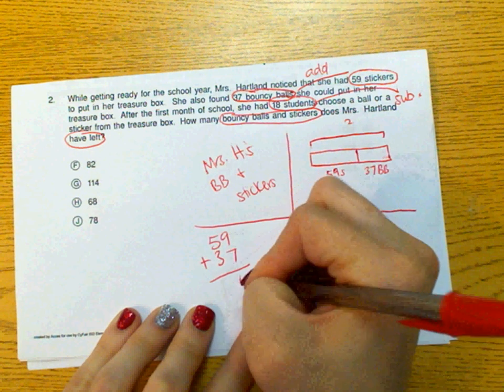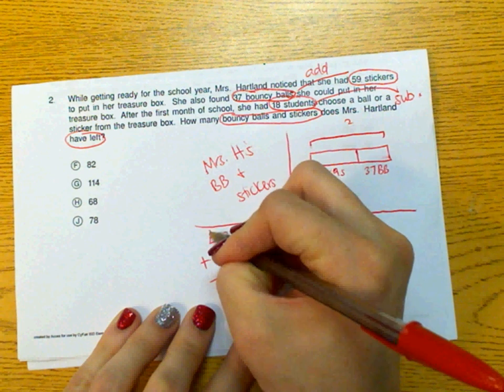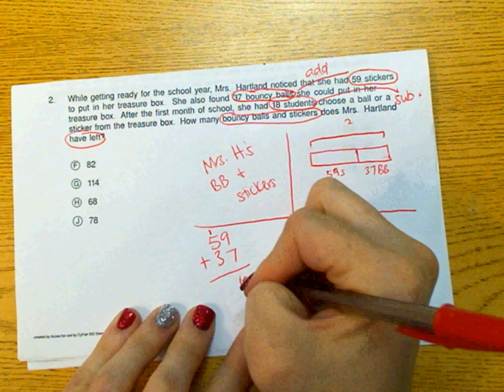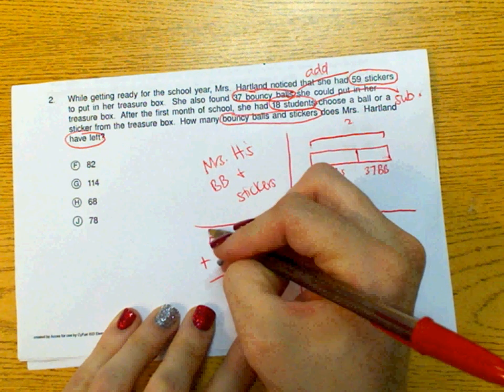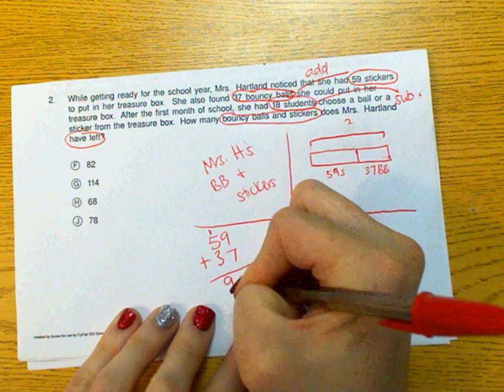9 plus 7 is 16. We need to remember, a lot of students have problems with this, we need to remember to regroup. 9 plus 7 is 16. We're going to carry our 1. 5 plus 1 is 6, 7, 8, 9. So that equals 96.